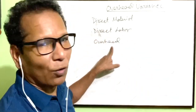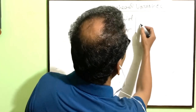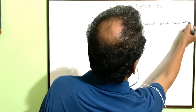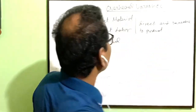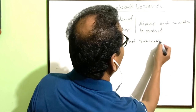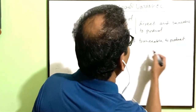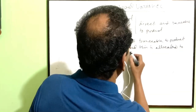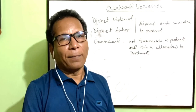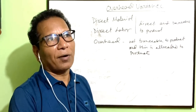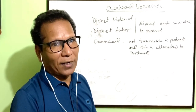We know there are 3 elements of cost to manufacture a product: direct material, direct labor, and overhead. Direct material and direct labor are direct and traceable to product, but overhead is not traceable to product and is allocated to products. There are many allocation ways to apply overhead to products, such as direct labor hour, which is generally the standard allocation method.